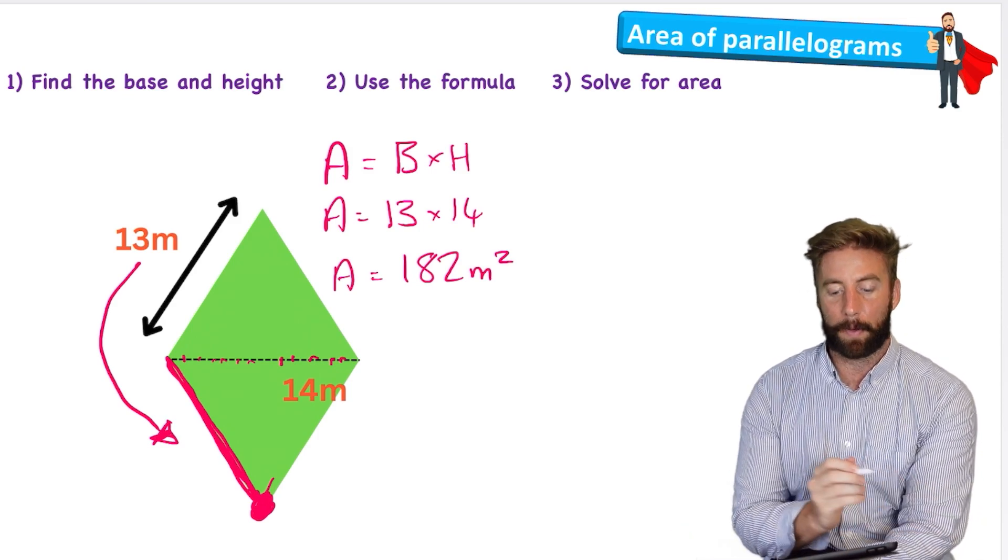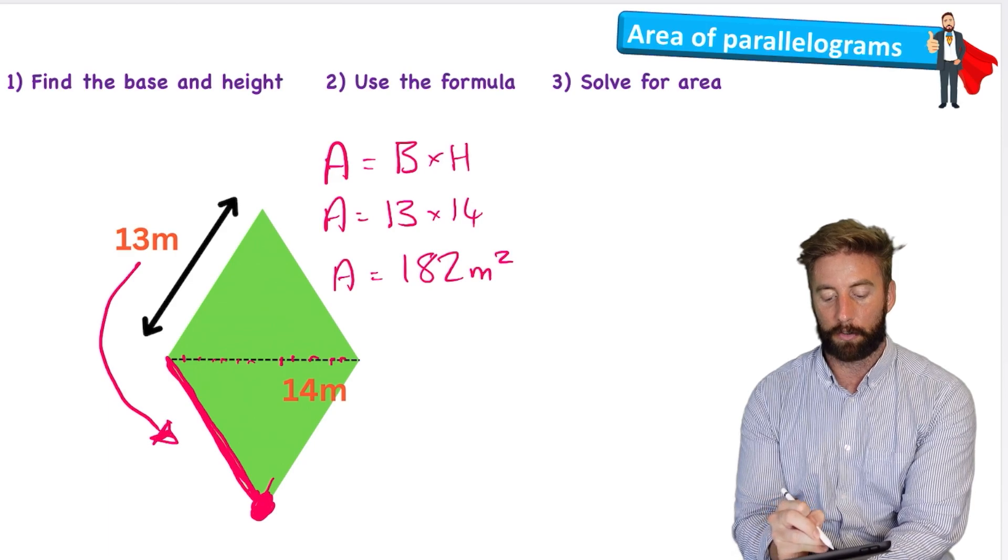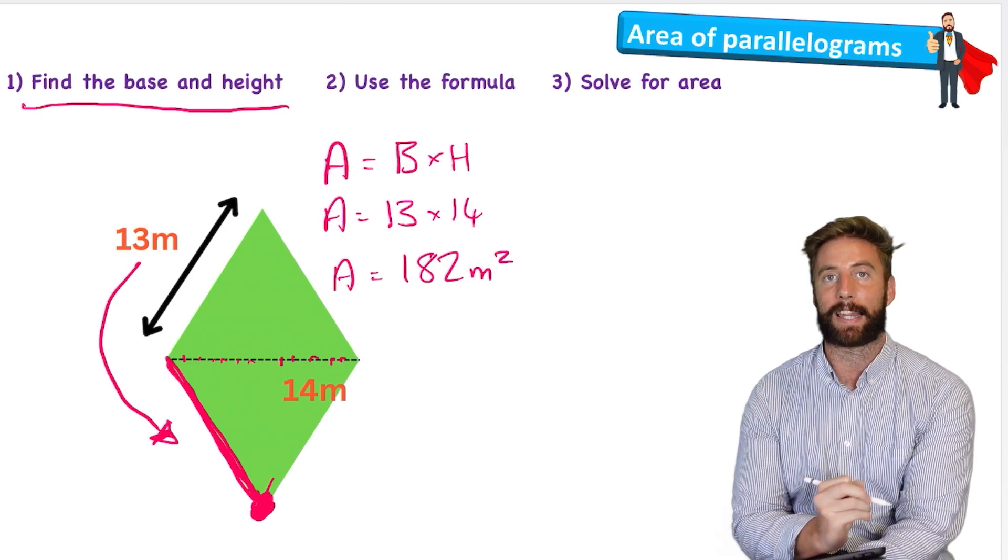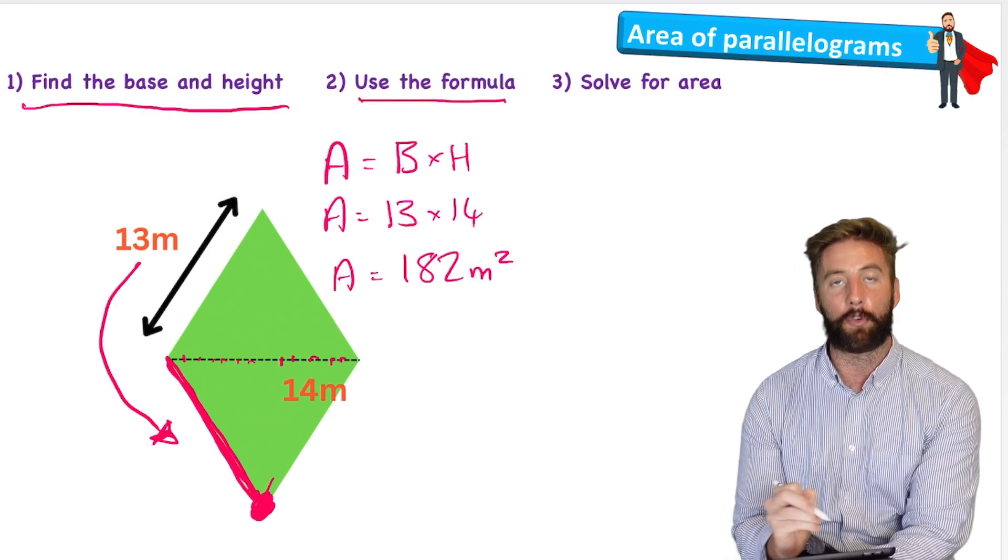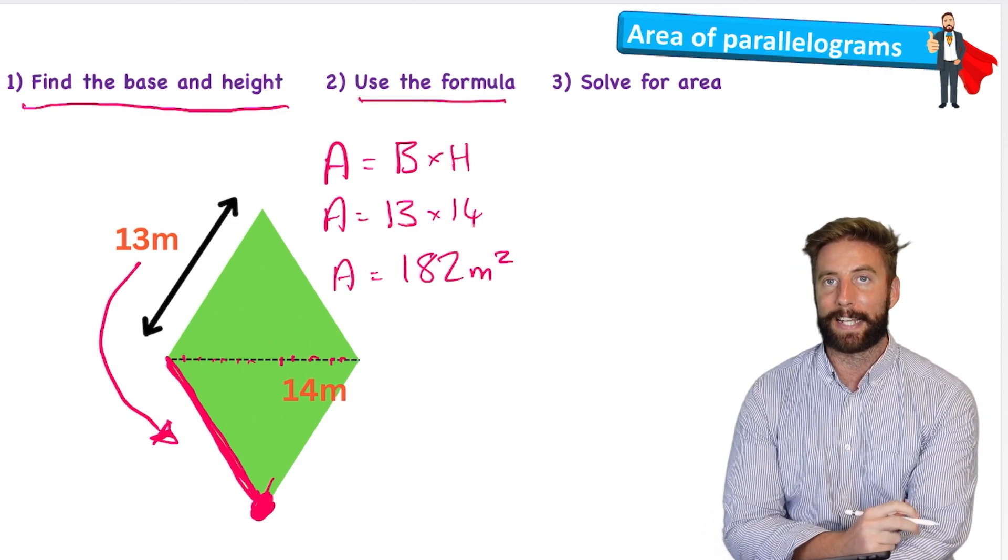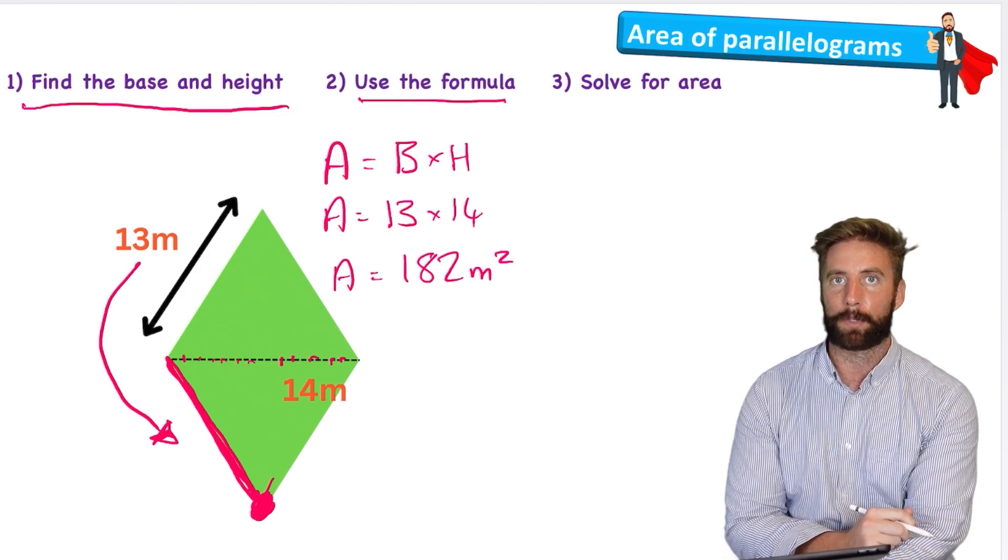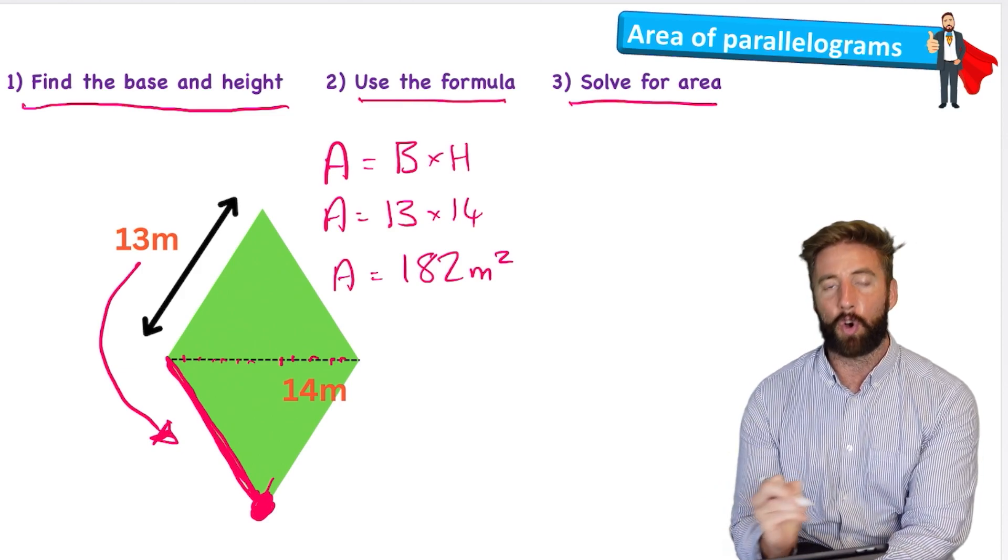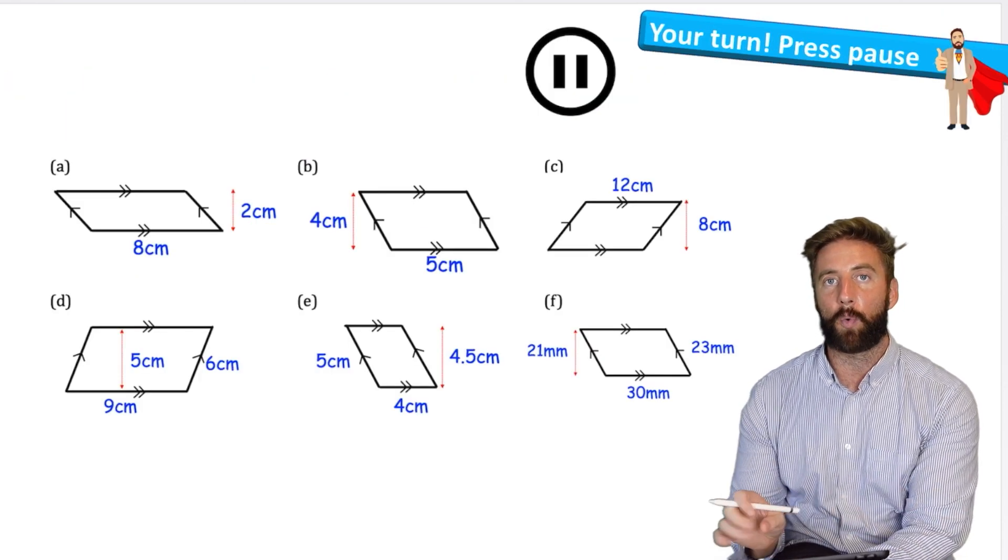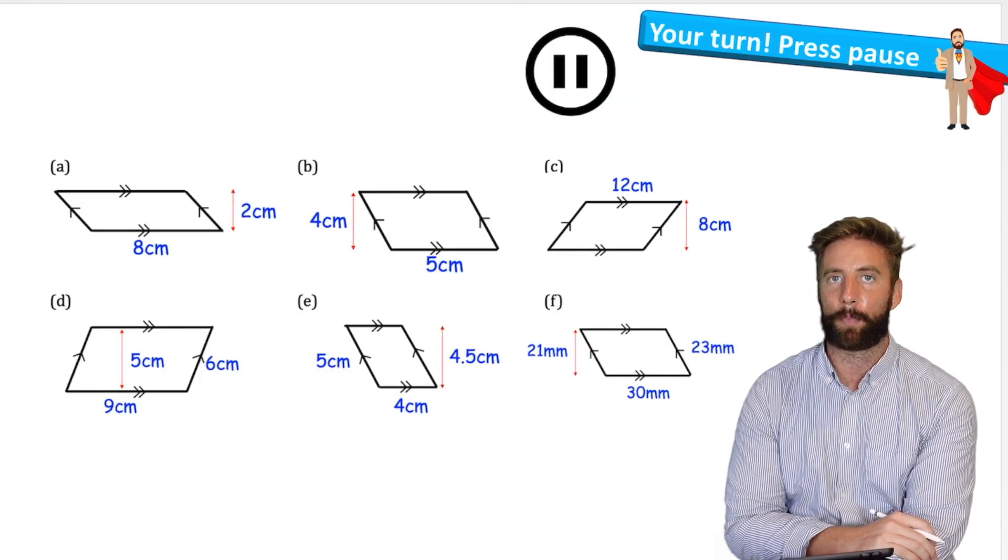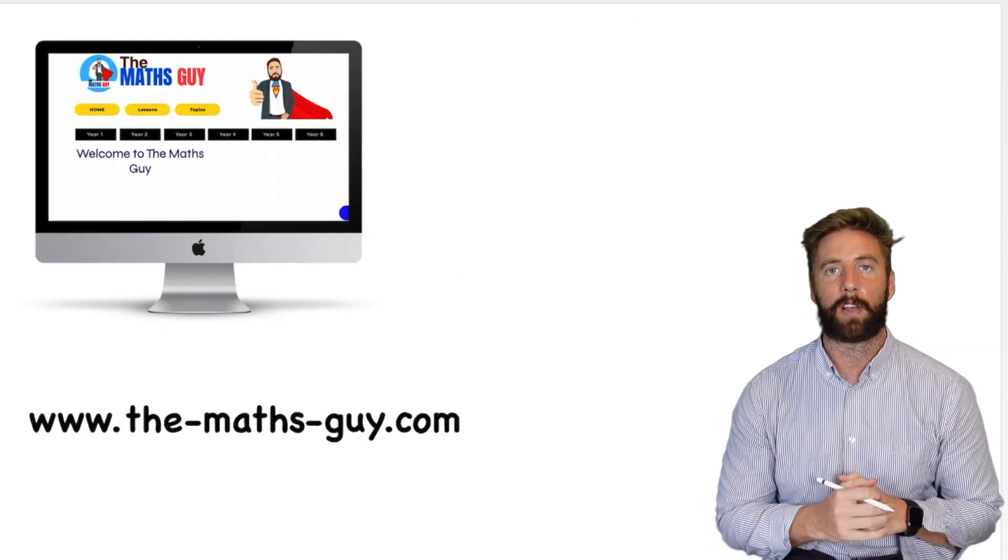Okay, there you go. Let's just think of a few things to remember by looking at our steps again. So first we want to find the base and the height, and sometimes the base or the height can be a little bit hard to find. Then we're going to use our formula, and our formula is area equals base times height. And then we're just going to solve the formula to get our area. So here are some questions for you. Have a go at working these out and put your answers in the comment section. I'm going to try and mark them all.